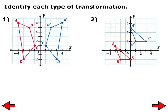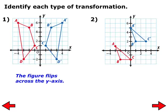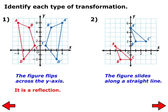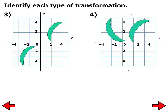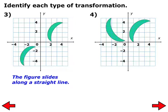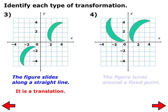Quickly identify each type of transformation in problems 1 through 4. If you're not sure, look at the picture that had all three of them in it. Number one is a reflection because the quadrilateral is flipping across the y-axis, where the y-axis is like the mirror. Number two, the triangle is sliding along a straight line, so that is a translation. Number three, the figure is sliding across a straight line, so that is also a translation. And number four is rotating about (0,0), or the origin.